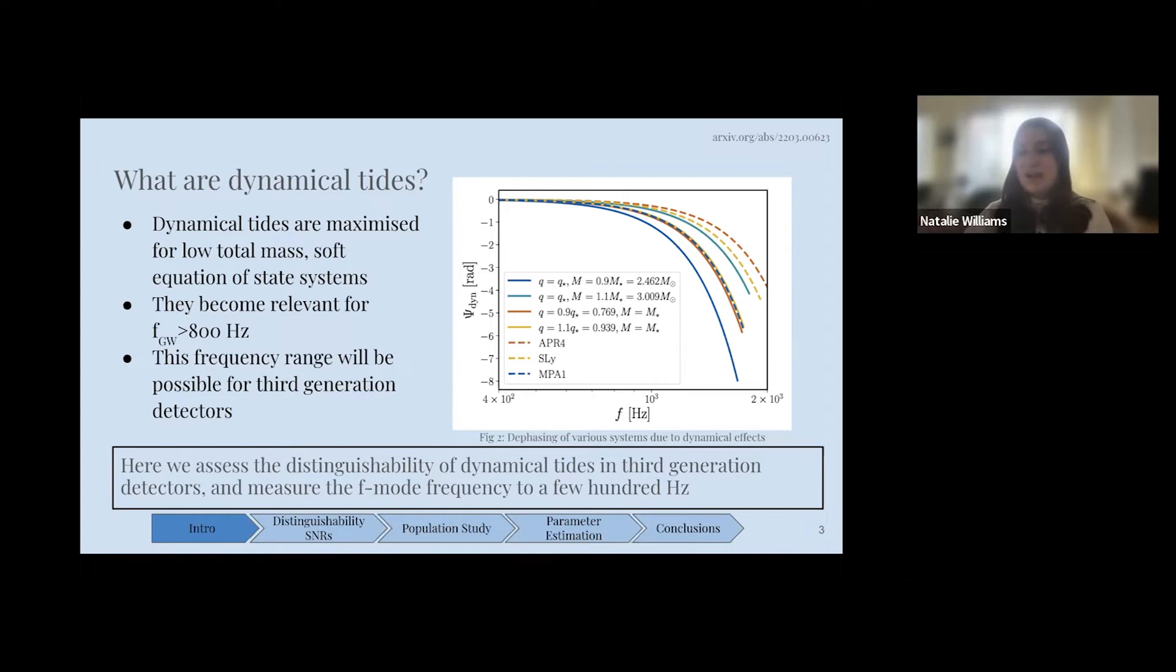F-modes are commonly contextualized as a post-merger quantity. However, at these really high frequencies in the post-merger, it's unlikely that we will measure these f-mode frequencies anytime soon. However, they do have an imprint in the inspiral for the individual neutron stars, which is what we look at in this case. This above 800 hertz will be available for next generation, third generation 3G detectors. In this work, we look at the distinguishability of dynamical tides in third generation detectors and measure the f-mode frequency.